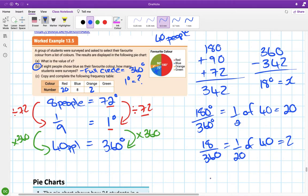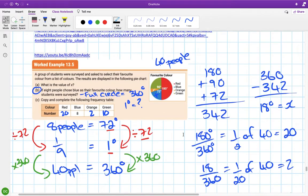You should be able to figure out green by subtraction, but using the angles: 90 out of 360 is a quarter, and a quarter of 40 is 10. Does that work? 20, 10, and 10 makes 40, so yeah.